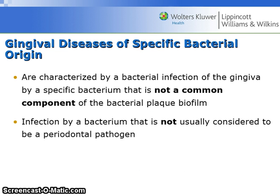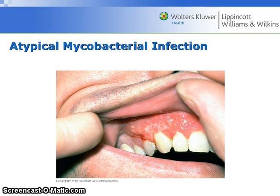Gingival diseases of specific bacterial origin are characterized by a bacterial infection of the gingiva by a specific bacterium that is not a common component of the bacterial plaque biofilm — a bacterium not usually considered to be a periodontal pathogen. Here is an example of an atypical mycobacterial infection.